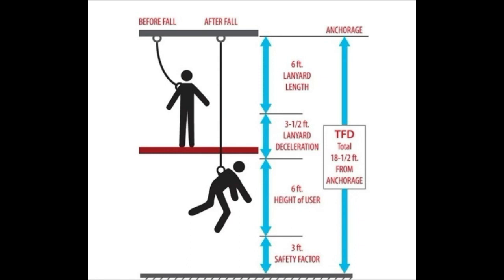Deceleration distance (DD). This is the vertical distance a worker falls after the fall arrest system activates and before the fall is completely arrested. The specific value for DD can be obtained from the manufacturer's guide for the equipment being used.